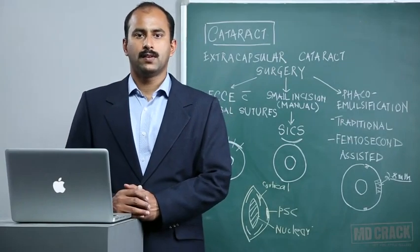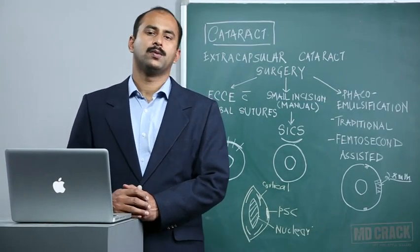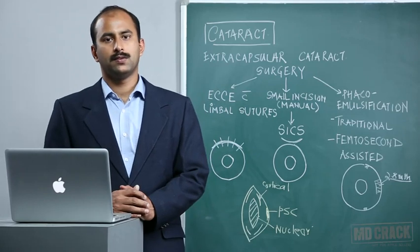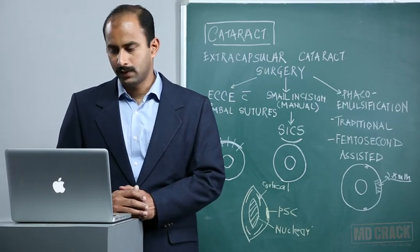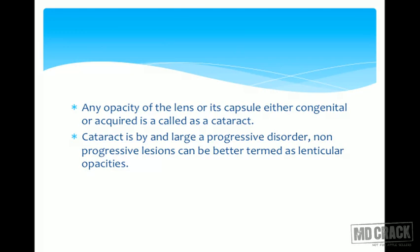In this module we will discuss a disease that is really commonplace among most of the patients we see in the OPD, that is cataract. According to its definition, cataract is an opacity in the lens or its capsule, either congenital or acquired. Cataract is by and large a progressive disease, and in case the opacity in the lens is fixed or non-progressive, it is called a lenticular opacity.